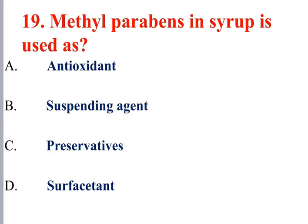Question 19: Methylparaben in syrup is used as a preservative. It is an antimicrobial preservative. Carboxymethylcellulose is a suspending agent, and sorbitol is used as a sweetening agent.